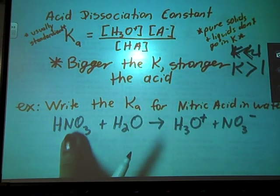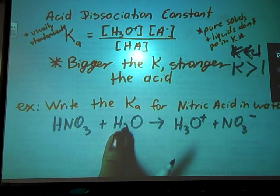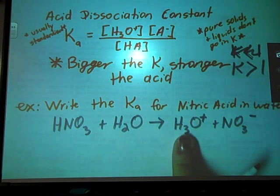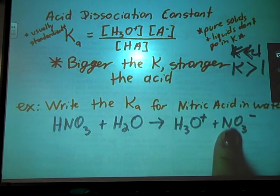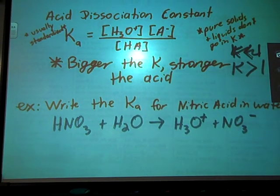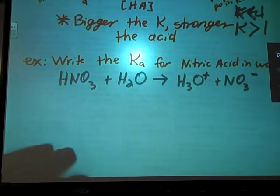So we have acid, base, conjugate acid because it picked up an H+, conjugate base because it lost the H+. So my K, you still see that? Yes.